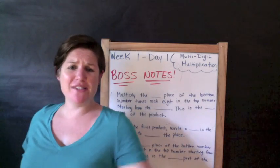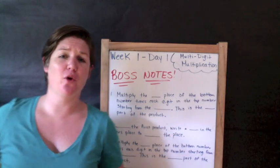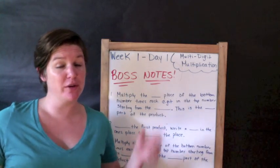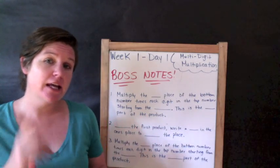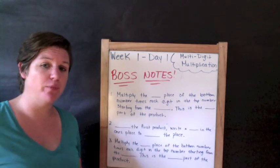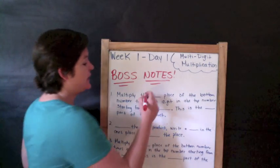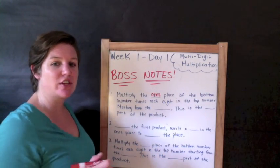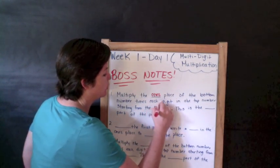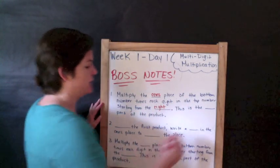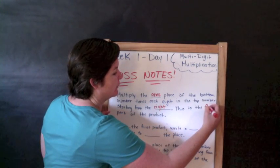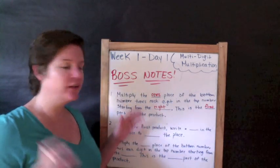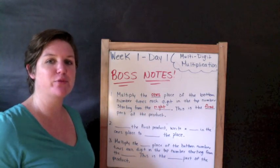Boss notes, everybody! Alright, you're going to record in the blanks with me if you are using the workbook. To access the workbook, click the link, you can download it instantly and move along with the video. So here we go. Boss notes. Multiply the ones place of the bottom number times each digit in the top number starting from the right. Okay, this is the first part of the product. I know this is a little bit wordy right here, but it's okay because we're going to break it into action steps with numbers in just a little bit.